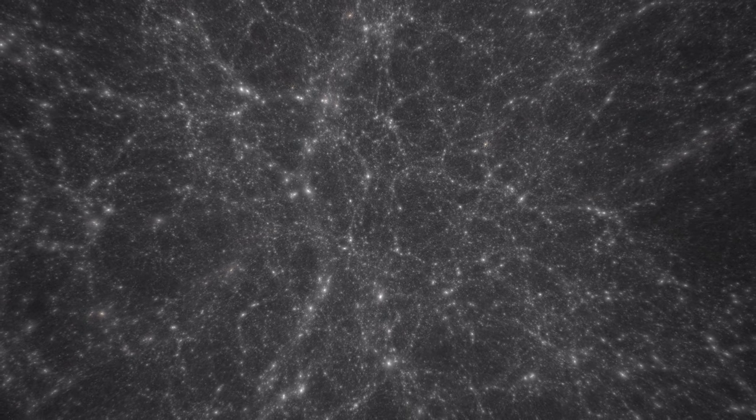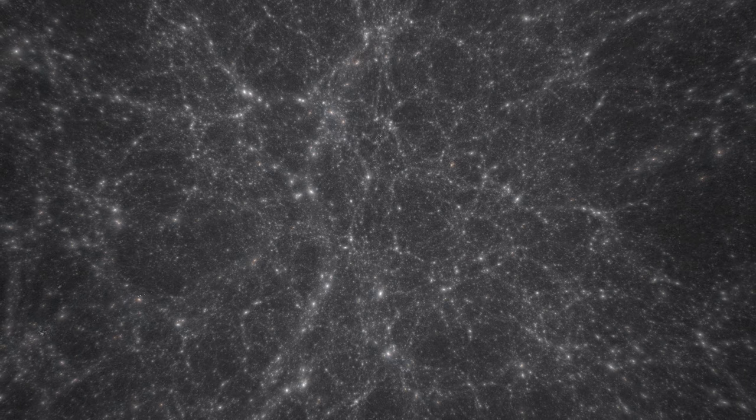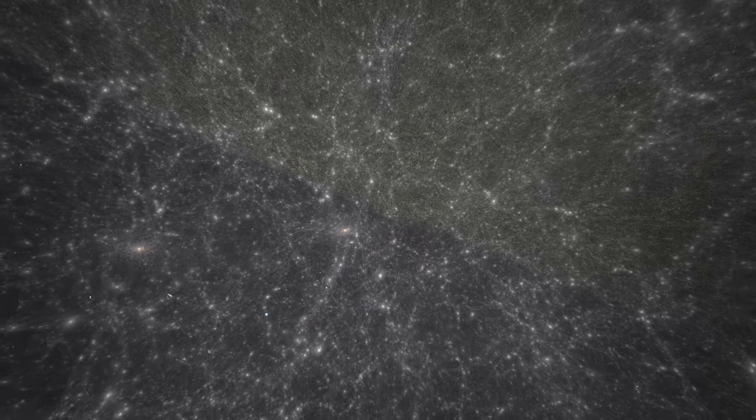While the cosmic web is traced by the light emitted by galaxies, the numerical simulations tell us that these large-scale structures are dominated up to 80% by dark matter. The filamentary structure that emerges in numerical simulations is in perfect agreement with observation.